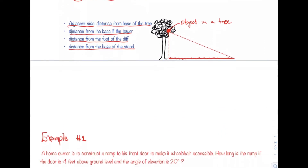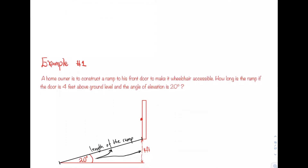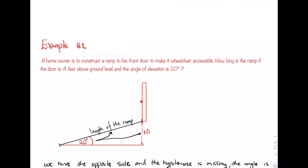Let's jump into some examples. Example number one: A homeowner is to construct a ramp to his front door to make it wheelchair accessible. How long is the ramp if the door is four feet above the ground level and the angle of elevation is 20 degrees? I've already given a pictorial representation. The ramp is elevated at 20 degrees and the height above the ground is four feet. So if we're to find the length of the ramp, this is asking us for the hypotenuse. We have the opposite side and the hypotenuse is missing.